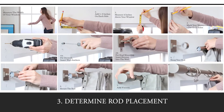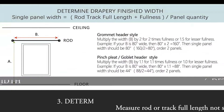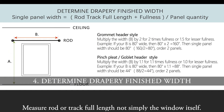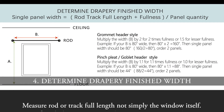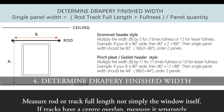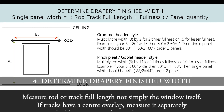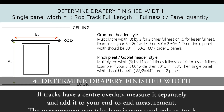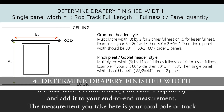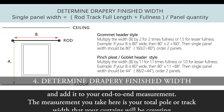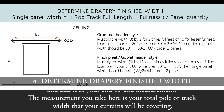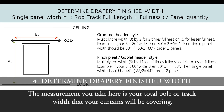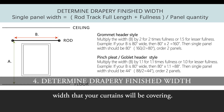3. Determine rod placement. 4. Determine drapery finished width. Measure the rod or track full length, not simply the window itself. If tracks have a centre overlap, measure it separately and add it to your end-to-end measurement. The measurement you take here is your total pull or track width that your curtains will be covering.